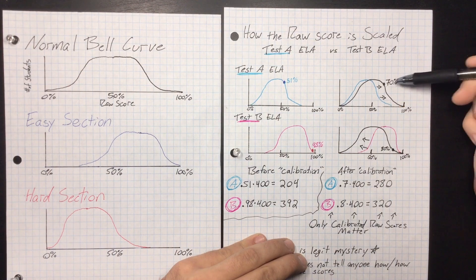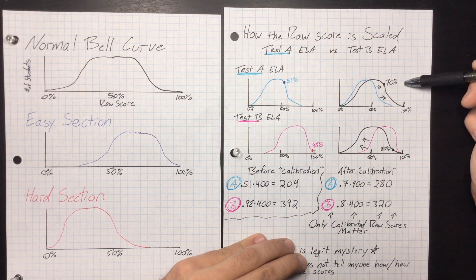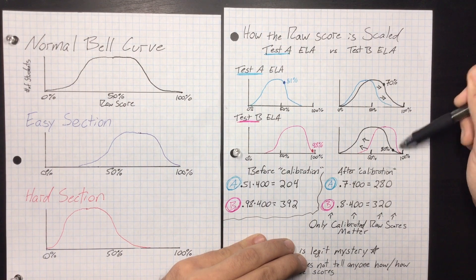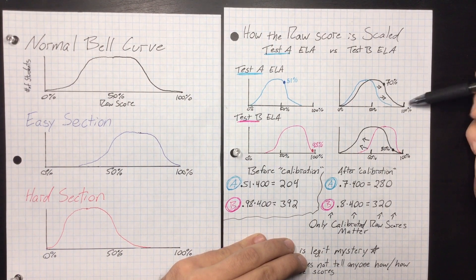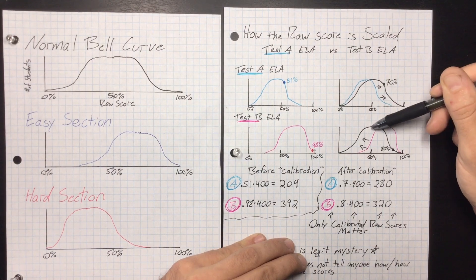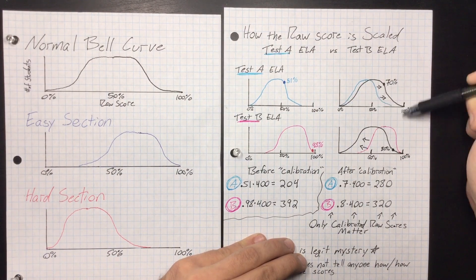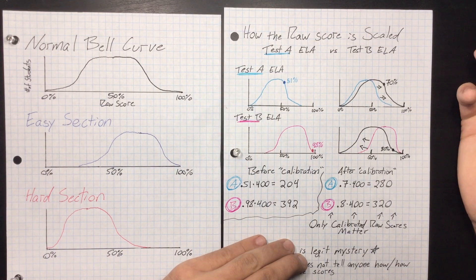So now we can compare this score to this score, and it looks like yes, you did 10% better on this ELA section than your buddy did in this ELA section. Because since they're now in the shape of the normal bell curve, you can appropriately compare them.